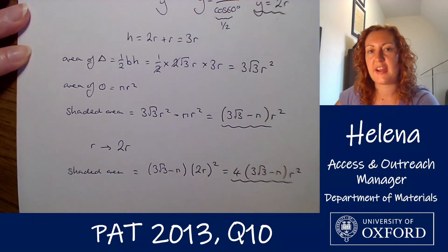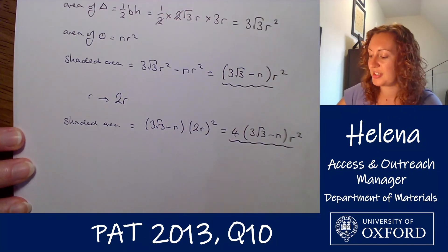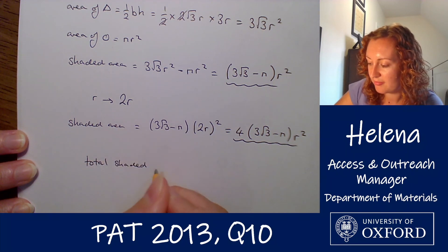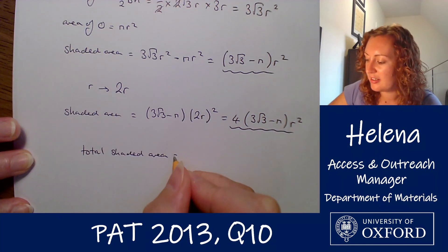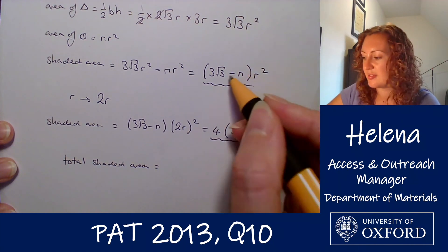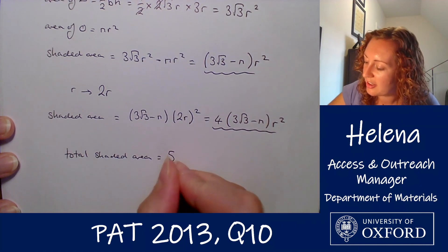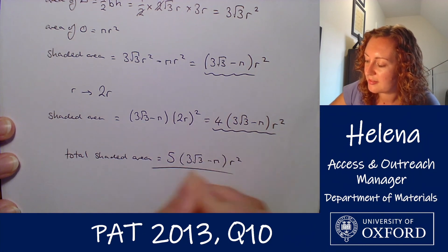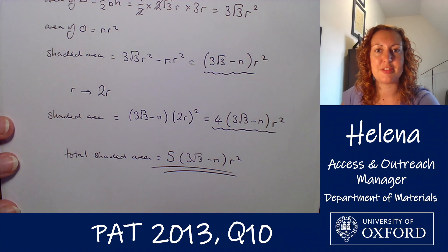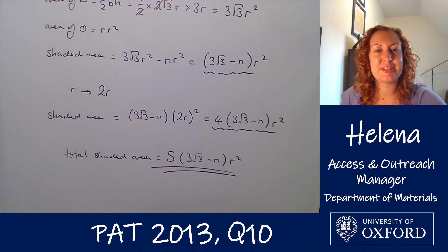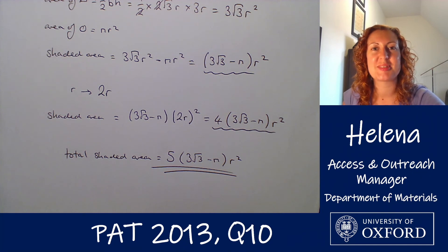So that's the larger triangle shaded area — those three outer sections. To find the full shaded area we add them together: total shaded area = 4(3√3 − π)r² + (3√3 − π)r² = 5(3√3 − π)r². And that is the area we've been asked to find. I hope that was useful — thank you for watching and join us again next week for another PAT Problems video.